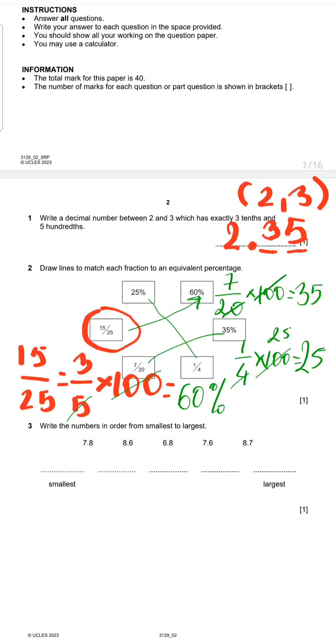Let's continue with question 3. Write the number in order from smallest to largest. How we can find the smallest decimal number? First of all, you need to pay attention to your whole number. What is your whole number? Whole number is before decimal point.